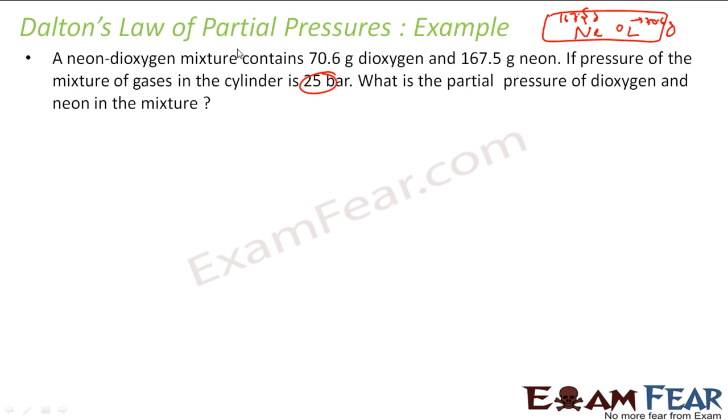So for partial pressure, the first thing we do is find the number of moles. As I told, partial pressure by 1 will be n1 by n1 plus n2 into P total. Total pressure is given to us. If you want to find partial pressure, you find the number of moles. And number of moles is nothing but mass by molar mass.